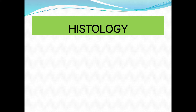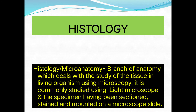Now, how can we study the cell in detail? The science is called histology. Histology, or microanatomy, is a branch of anatomy which deals with the study of tissue in living organisms. It is commonly studied using a light microscope, with specimens sectioned, stained, and mounted on a microscopic slide.